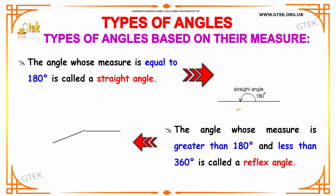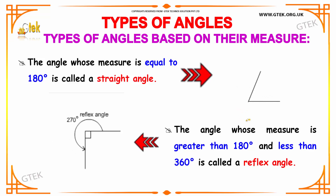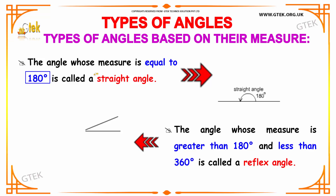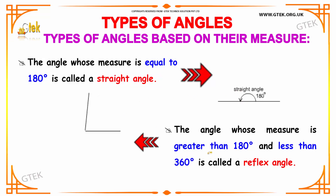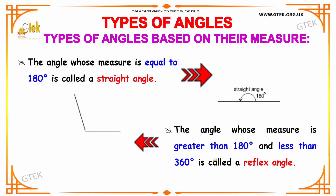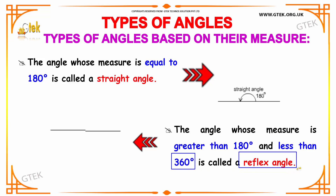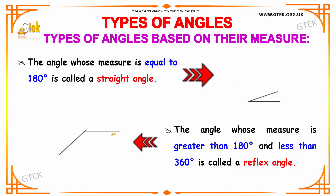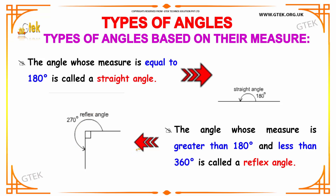If the angle has the measure equal to 180 degrees, then it is said to be a straight angle — the angle made by the lines is 180 degrees. If the angle's measure is greater than 180 degrees and less than 360 degrees, then it is said to be a reflex angle. Here you can see a reflex angle, which is more than 180 and less than 360 degrees.